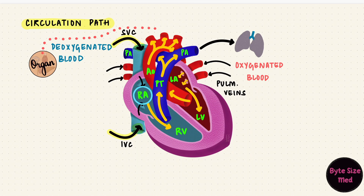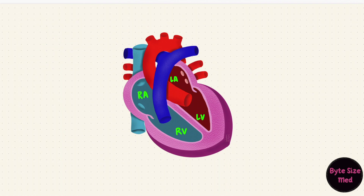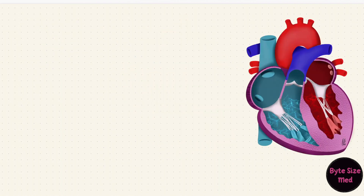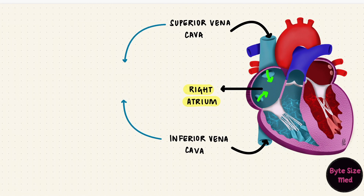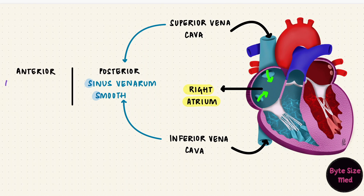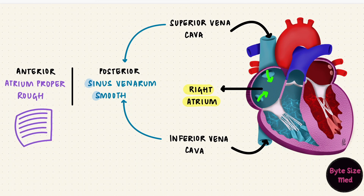So right now, we're in the right atrium. In this video, we're going to see what's inside all four chambers. First up, the right atrium. Almost all the blood from the body drains into the right atrium through these two big vessels, the superior and inferior vena cava. The superior vena cava enters in the upper portion and the inferior vena cava in the lower portion, but both enter on the posterior wall. Now that space is called the sinus venarum and it's smooth, versus the anterior space, which is called the atrium proper. This is rough — the anterior wall has ridges called the musculi pectinati.